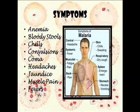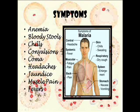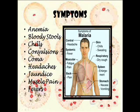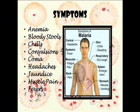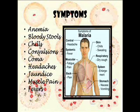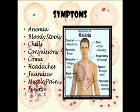Some symptoms you might get include anemia, bloody stools, chills, convulsions, and coma. Also headaches and jaundice — if you don't know what that is, it's where your gallbladder fails to produce bile and your skin turns a yellowish coloration. Muscle pain and fever are probably the most apparent symptoms of malaria, as well as in other diseases such as dengue and yellow fever. Other symptoms include fatigue, back pain, sweating, dry cough, and enlargement of the spleen and vomiting.